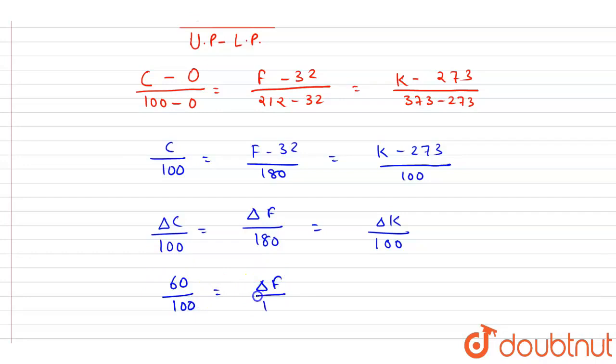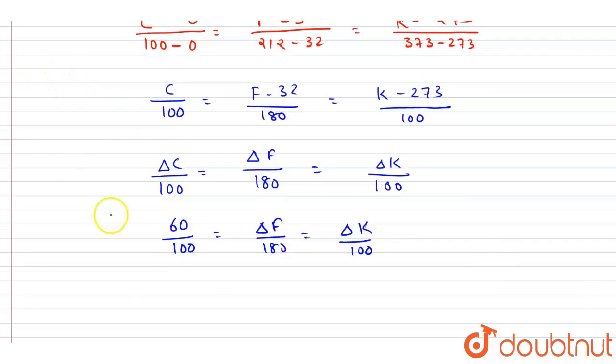So in Celsius scale it is 60, 60 by 100 is equals to change in temperature in Fahrenheit by 180, Kelvin by 100. So what I will write? In Kelvin it is simply the same, it is 60.